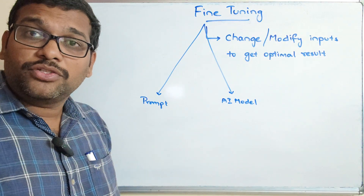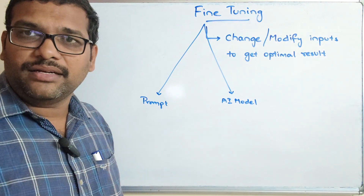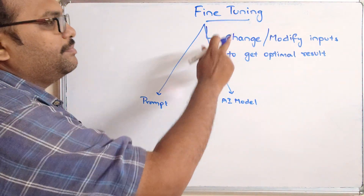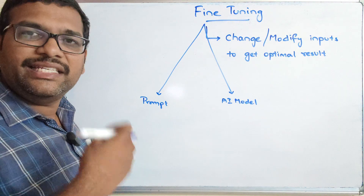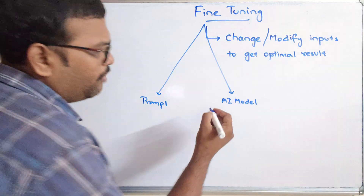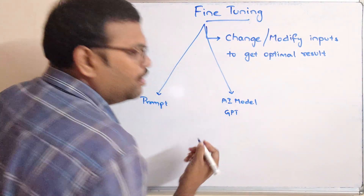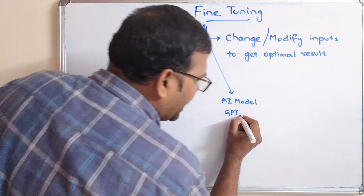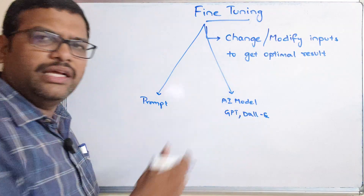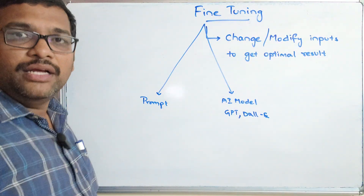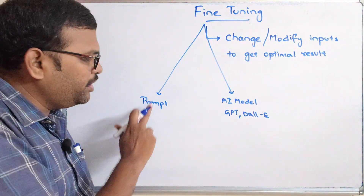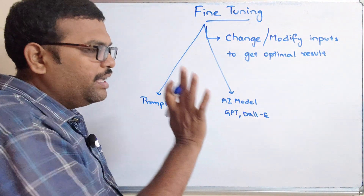We can refine the prompt so that we will be getting the optimal result - whatever the result we are expecting, we can reach that by optimizing the prompts, meaning every time we are changing the prompts. And coming to the AI model, we'll be using different AI models. GPT is one AI model for text generation, and DALL-E is also one AI model for image generation. So the two ways we can refine the inputs are: fine tuning of a prompt as well as fine tuning of an AI model.